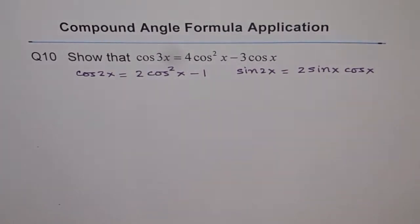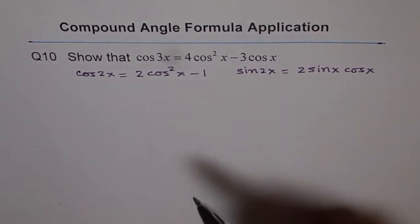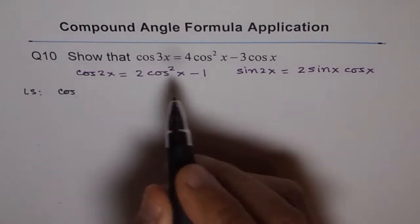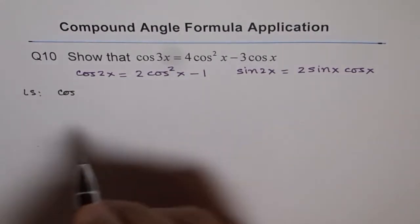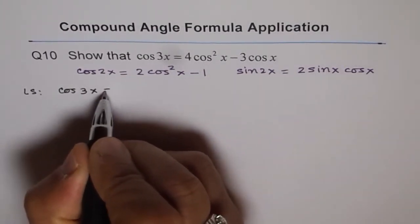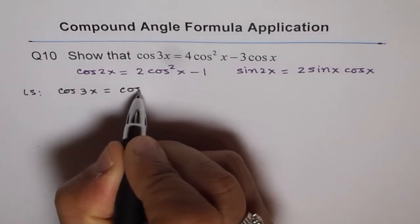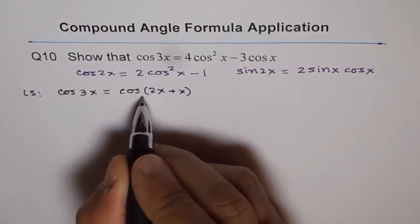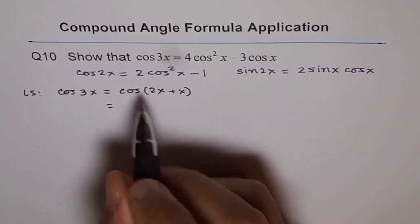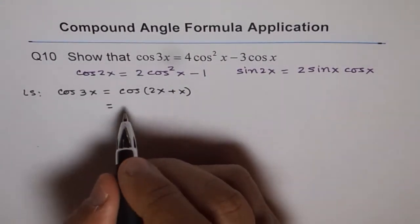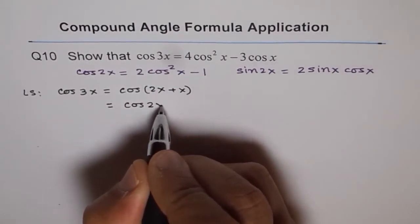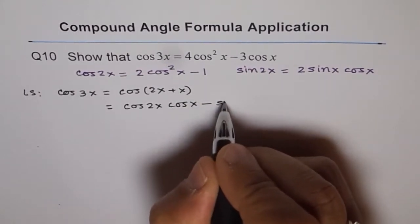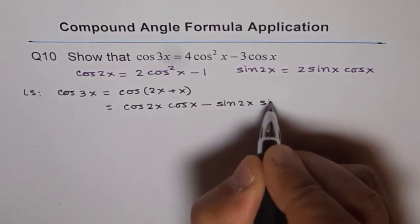Let me begin now the solution of this question of cos 3x. When you are trying to prove, we will start from left and prove the right side. Cos 3x could be written as cos of 2x plus x. Now cos of 2x plus x can be expanded using compound angle formula.